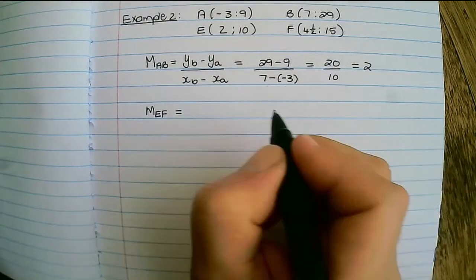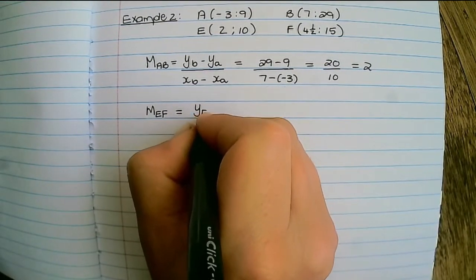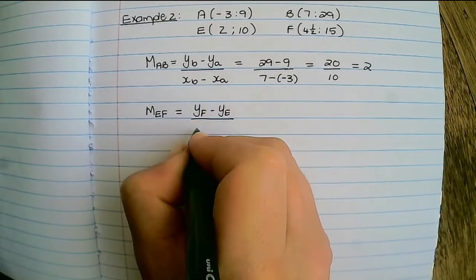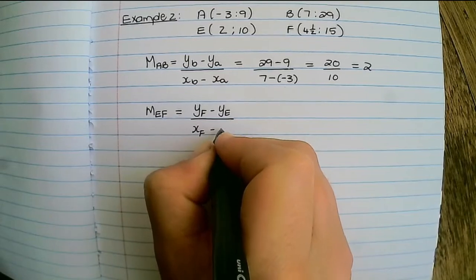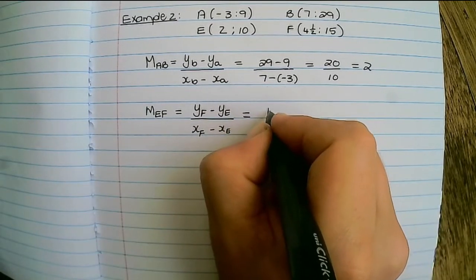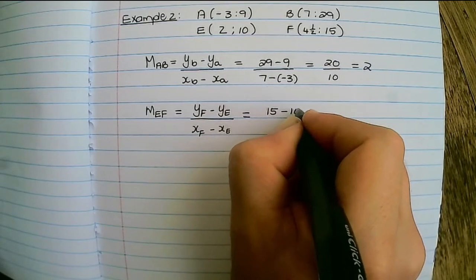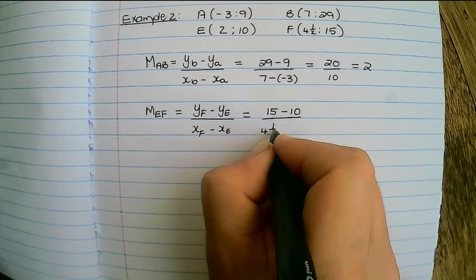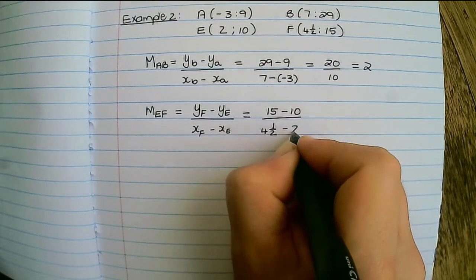So the gradient of EF would be the y of F minus the y of E over the x of F minus the x of point E. That will be 15 minus 10 over 4 and a half minus 2.